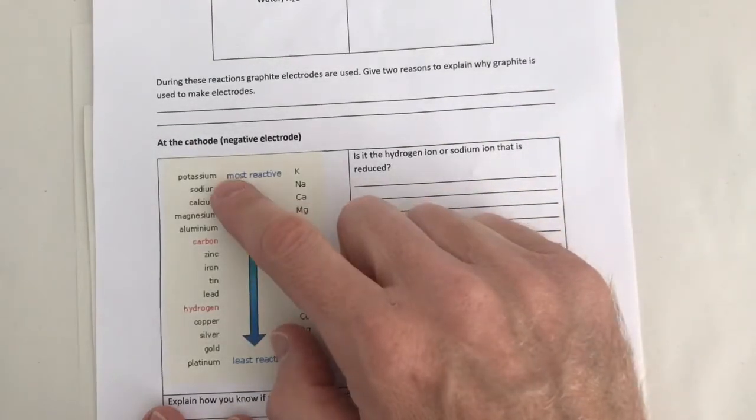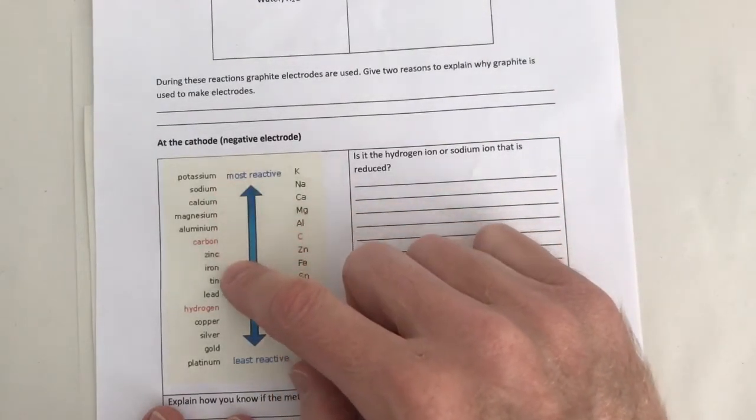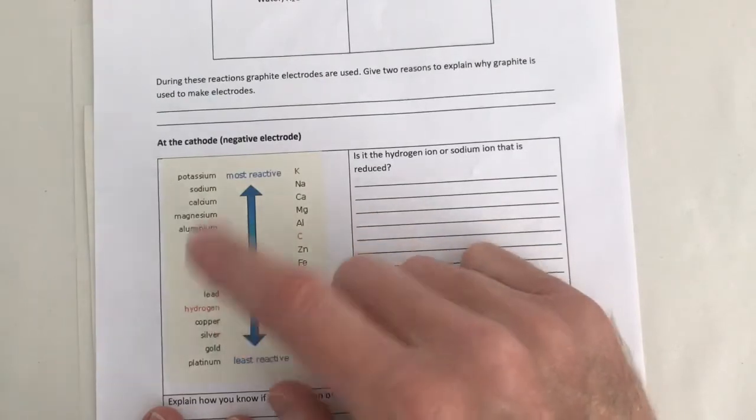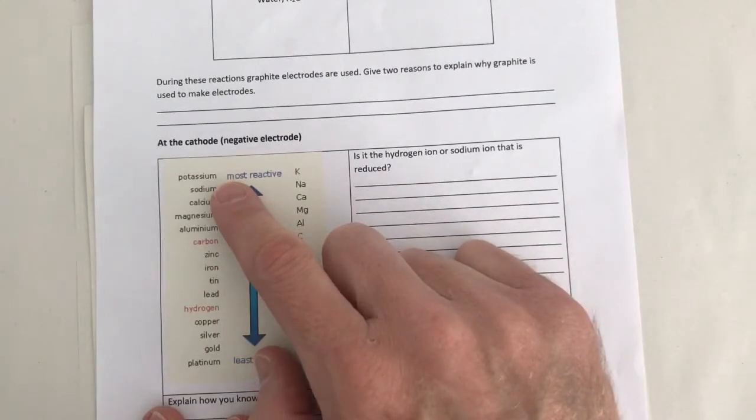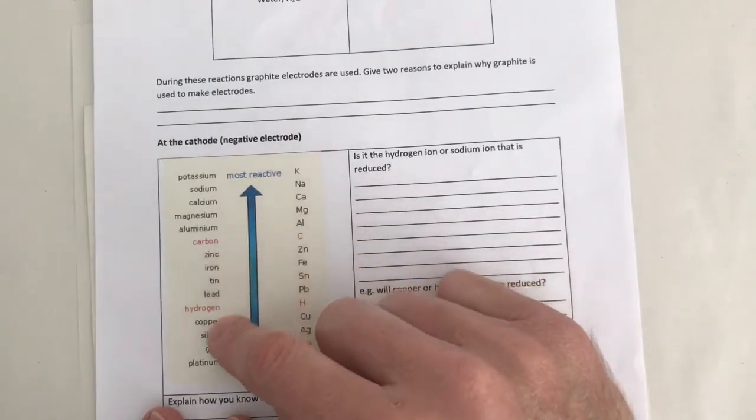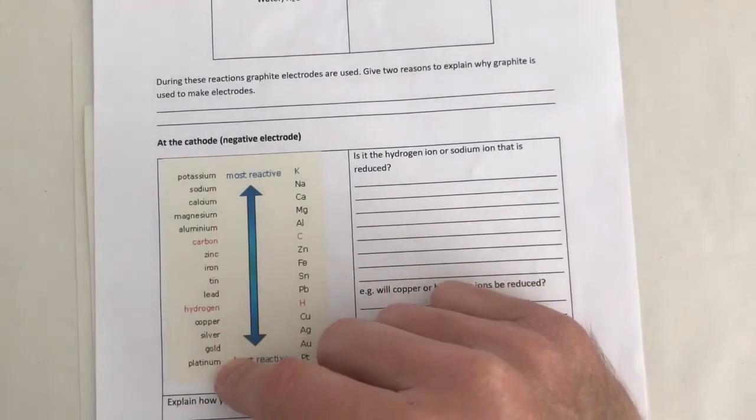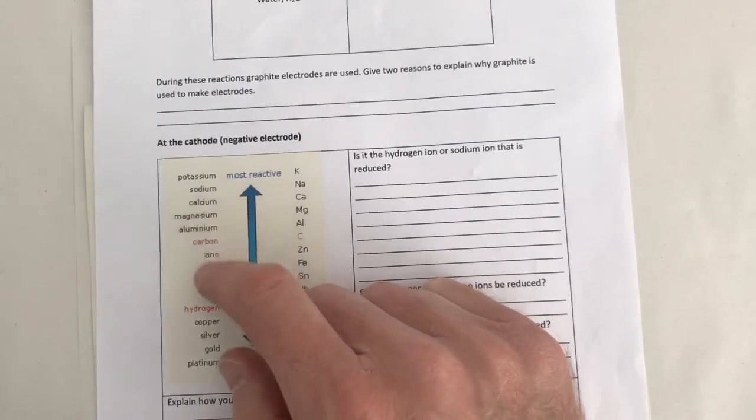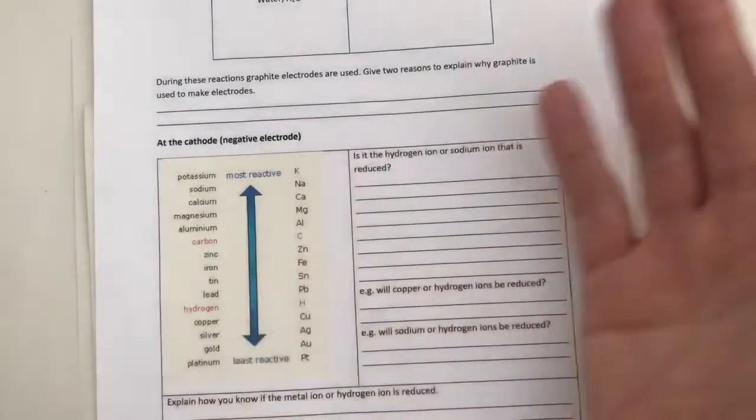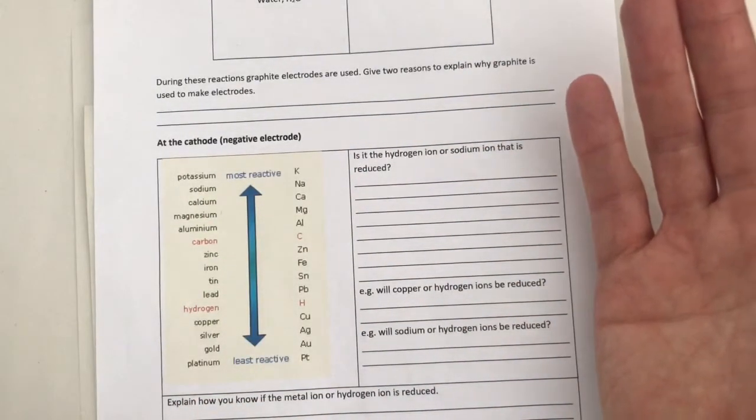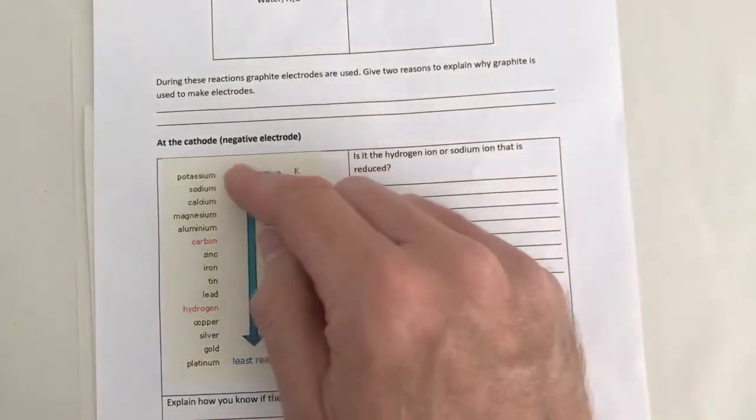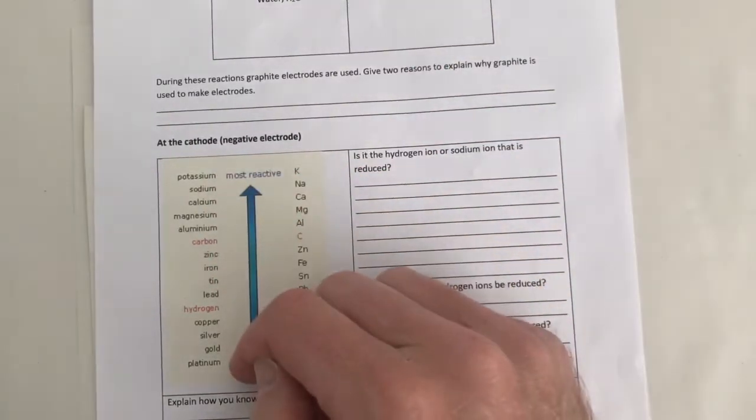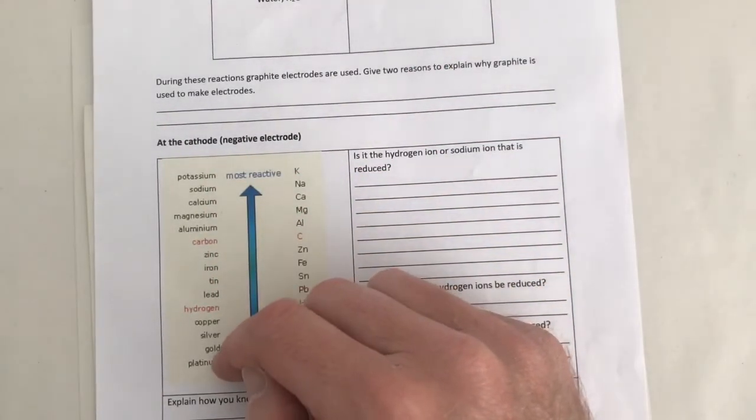And you see the reactivity series is a list of elements, most of which are metals with the exception of carbon and hydrogen, starting with the most reactive at the top and working our way down to the least reactive at the bottom. And this list has been put together based on observations of reactions of these elements, as you saw in one of the previous sessions with water. And we can then use the observations to decide which of these elements is the most reactive working our way down the list.